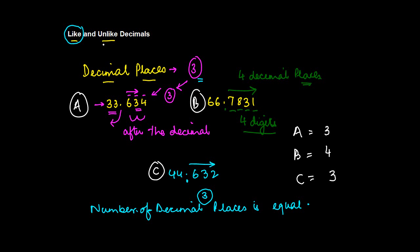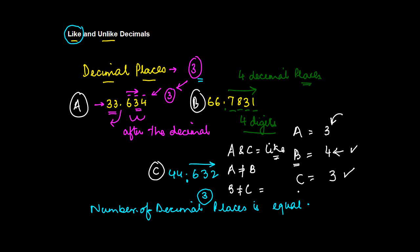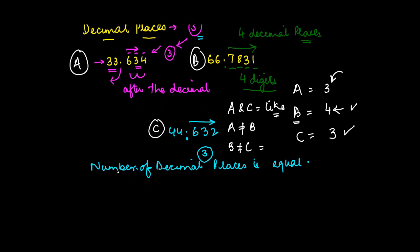Two numbers are said to be like decimals when the number of decimal places is the same. So A and C are like decimals, but A is not a like decimal with respect to B, because B has four decimal places whereas A has only three. For another example, if I have 33.15 and 42.16, in both cases there are two decimal places, so these are like decimals.